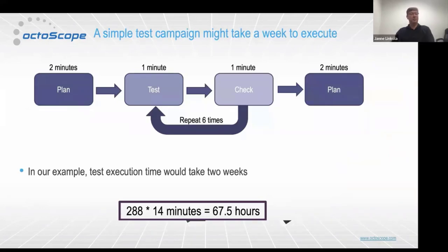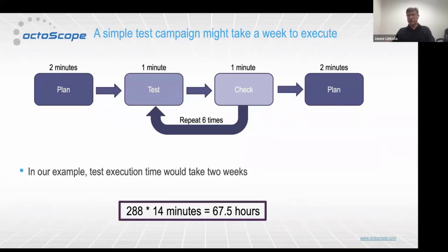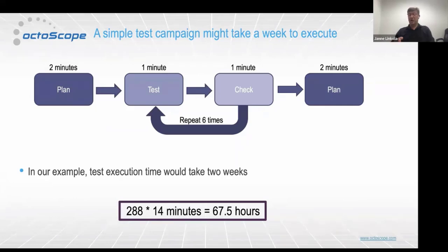If we do this manually in a test house with background interference, using a simple protocol — one minute executing the test, one minute checking and saving results, repeated six times per scenario, plus two minutes of reconfiguration before each of 288 scenarios — the data collection alone takes almost two weeks: approximately 67.5 hours, assuming you don't have to repeat anything.